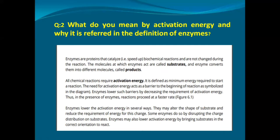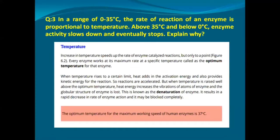Question number three: in a range of zero to 35 degrees Celsius, the rate of reaction of an enzyme is proportional to temperature. Above 35 degrees Celsius and below zero degrees Celsius, enzyme activity slows down and eventually stops — explain why. You will write the answer from the temperature topic, marking from where temperature is raised until enzyme activity may be blocked completely. This answer is on page number 110.